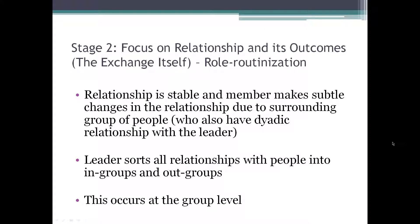The third step, role routinization, is when the relationship is now stable between the member and the leader, and the member makes subtle changes in the relationship due to their surrounding group of people. Person A, B, and C each have a dyadic relationship, and person C might make subtle changes in their relationship with the leader based on other relationships in their group. The leader also sorts all individual relationships with each member into in-groups and out-groups. In-groups are people closest to the leader; out-groups are more transactional subordinates. This occurs at the group level.